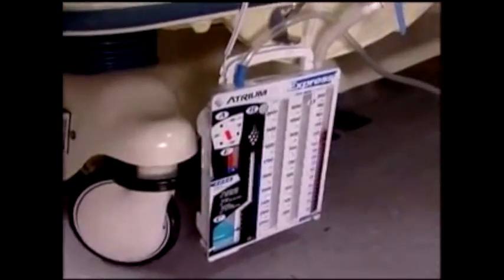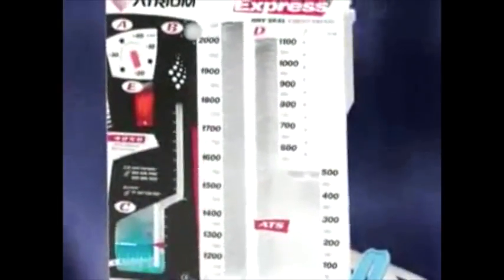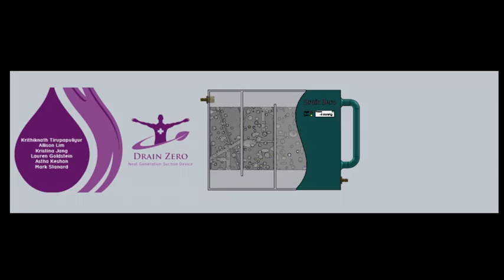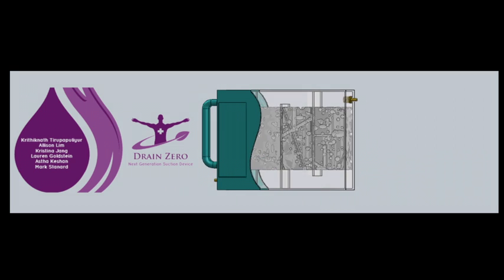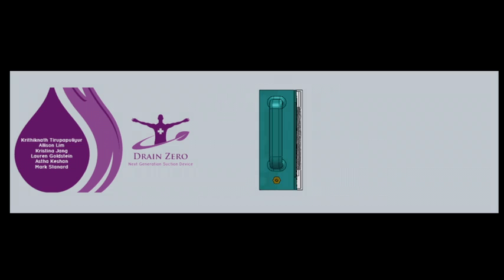The existing three-bottle chest tube drainage system on Earth will not work without gravity, as the wet seal system relies on gravity to separate chest fluid from air and prevent backflow. Therefore, our team has devised a vacuum-based system to create negative pressure to suction out unwanted fluid from the lungs.